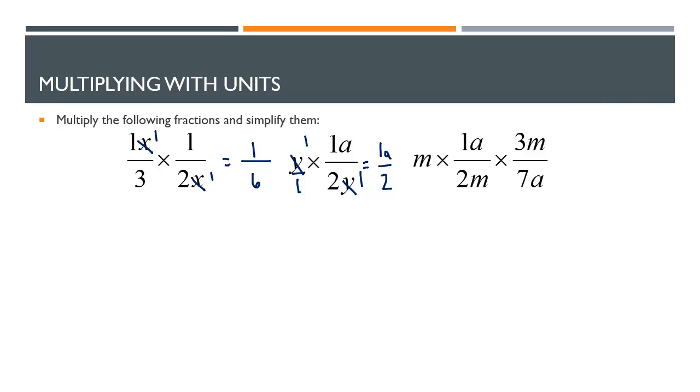Now in the case of this last problem, we have m times 1a over 2m times 3m over 7a. We can cancel out the bottom m, but which m should we cancel out on top? The answer to that is we can cancel out either of the m's on top. So I'm going to cancel out the first m. And what we end up with after we cancel out the 2 a's is 3m, because that variable stayed. It wasn't cancelled out over 14, which comes from 2 times 7.